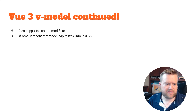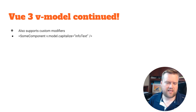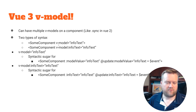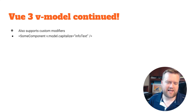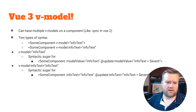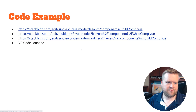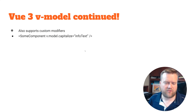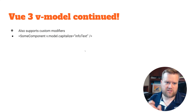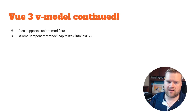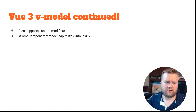V model in Vue 3 also supports custom modifiers. You can do some-component V-model dot capitalize. So just like V-model, you can chain a dot modifier — for example V-model dot capitalize equals info-text. You're probably wondering what modifiers are: you can check inside your child component whether a modifier is attached to the V model and then do different things, like capitalizing values.